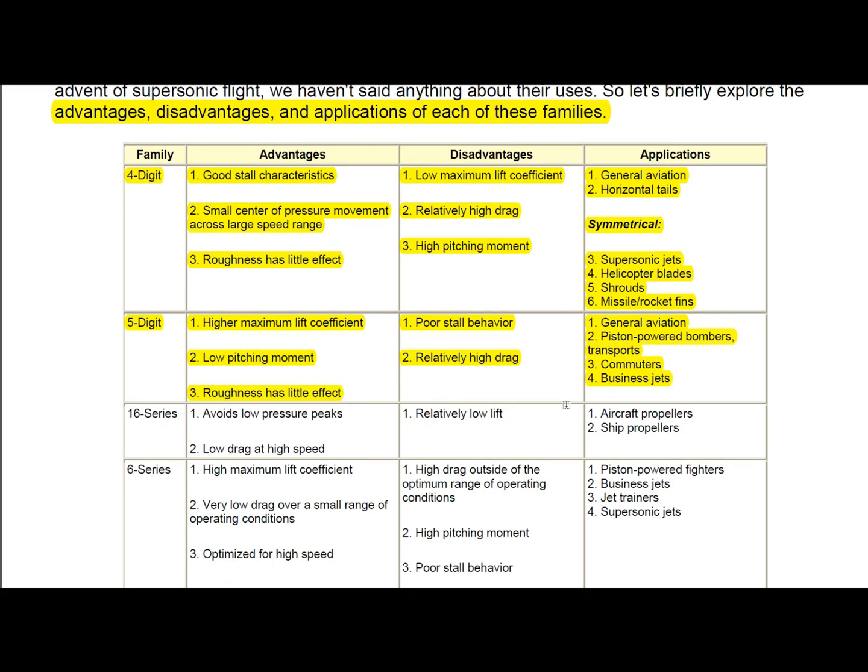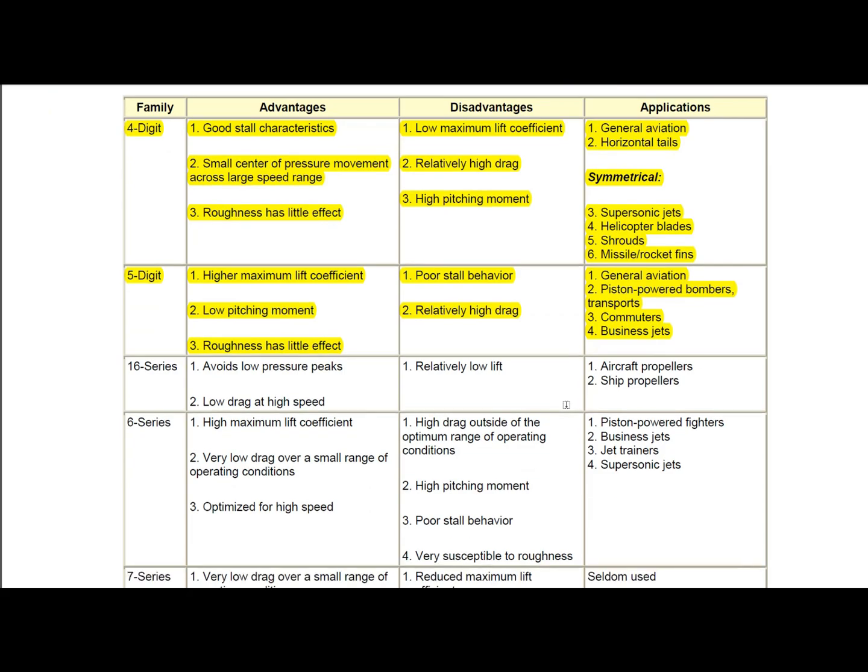NACA five digit series airfoils has high maximum lift coefficient, low pitching moment, also has little roughness effect. But the main disadvantages of these are poor stall behavior and relatively high drag.